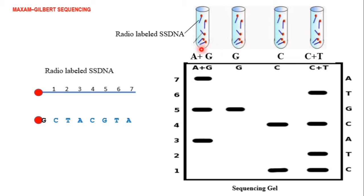The radio-labeled single-stranded DNA is split into four tubes. In tube one, the reaction cleaves A and G nucleotides. In tube two, it cleaves only G nucleotides. In tube three, it cleaves C nucleotides. In tube four, it cleaves C and T nucleotides from the chain.